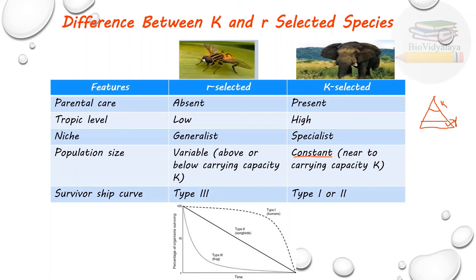Survivorship curve: R selected species show Type 3 and K selected species show Type 1 or Type 2. The survivorship curve has three types: Type 1, Type 2, and Type 3. Survivorship curve for R selected species is Type 3 and for K selected species is Type 1 or Type 2. In the next video, I will explain about the survivorship curve in detail.